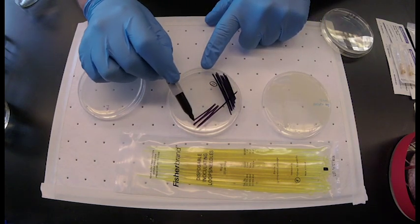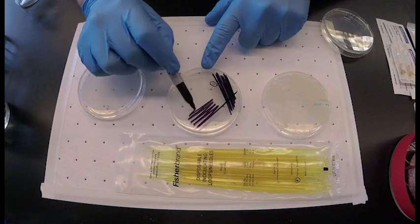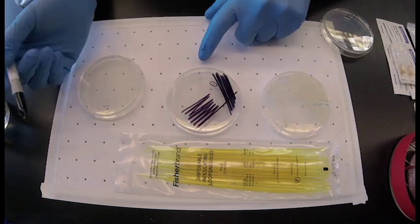Now rotate the plate and streak again through the first area. This will dilute the bacteria further.